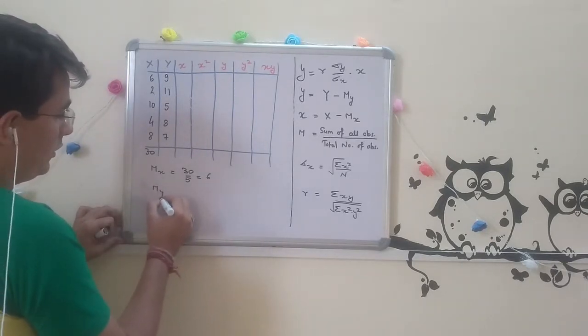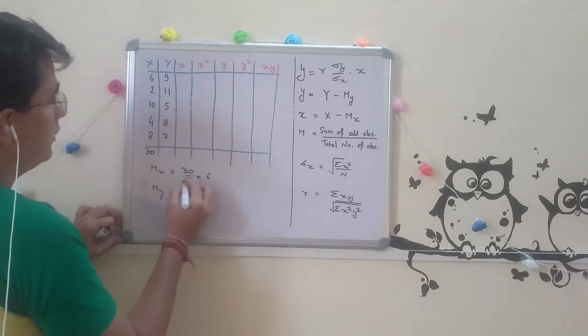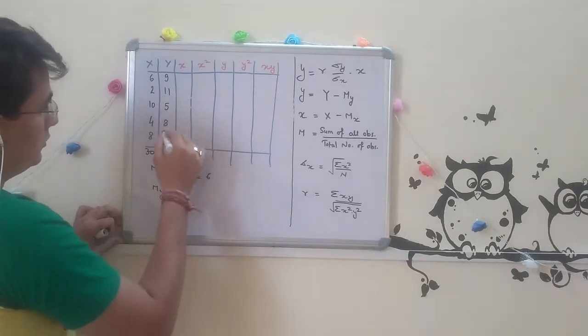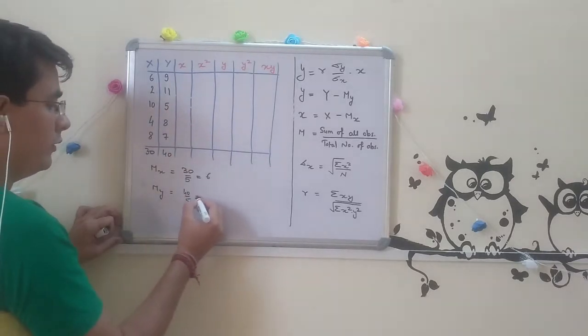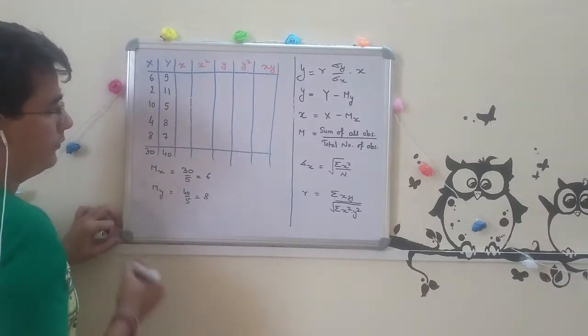And mean of y would be 10, 20, and 40. So 40 over 5, it will be 8.